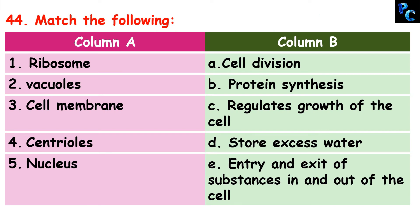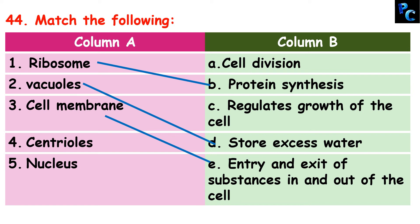Match the following. Column A has ribosome, vacuole, cell membrane, centriole, and nucleus. Column B has cell division, protein synthesis, regulates growth of the cell, stores excess water, and entry and exit of substances in and out of the cell. Ribosome — protein synthesis. Vacuoles — store excess water. Cell membrane — entry and exit of substances in and out of the cell. Centrioles — cell division. Nucleus — regulates growth of the cell, because it is the control center of the cell.